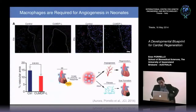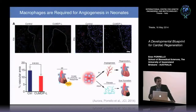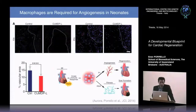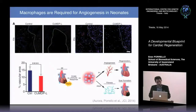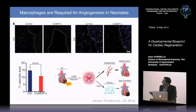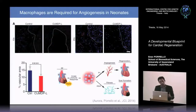Investigating the mechanism, we found no difference in cardiomyocyte proliferation between clodronate and control groups. Instead, there was impairment of the angiogenic response following injury. The macrophages following infarction of the one-day-old heart are actually required for angiogenesis, which is critical for post-MI regeneration. In contrast, macrophages in the adult heart are important for fibrotic scar formation — something very different in immune regulation at these two stages of cardiac development.